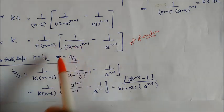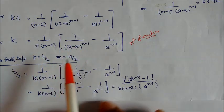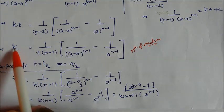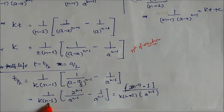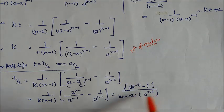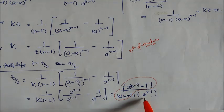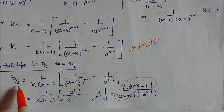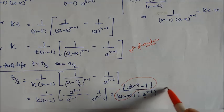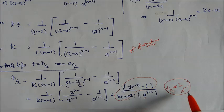To find the half-life of the nth order reaction, substitute x equal to a/2. On substituting, t becomes t-half. After simplification, the half-life equation becomes t-half equal to (2 to the power (n minus 1) minus 1) divided by k(n minus 1) times a to the power (n minus 1). So t-half is inversely proportional to a to the power (n minus 1).